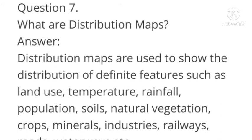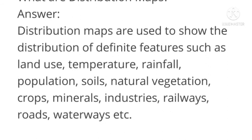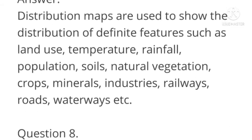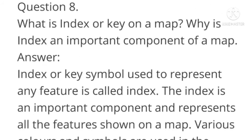Question number seven: What are distribution maps? Answer: Distribution maps are used to show the distribution of definite features such as land use, temperature, rainfall, populations, soils, natural vegetation, crops, minerals, industries, railways, roads, waterways, etc.